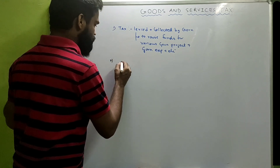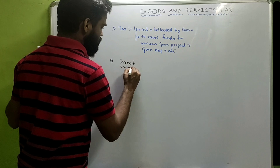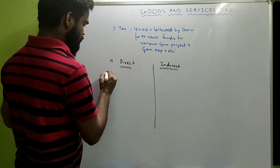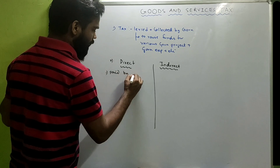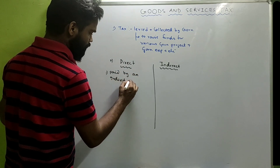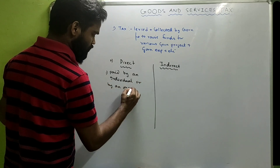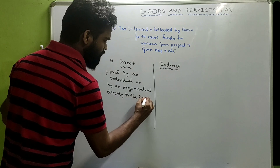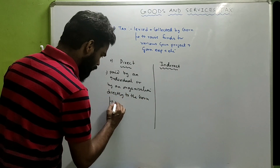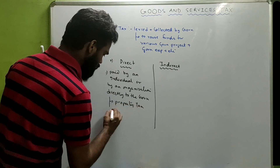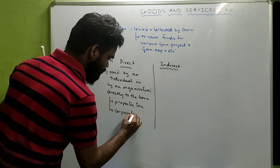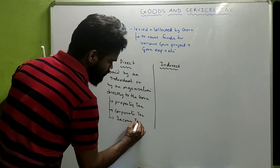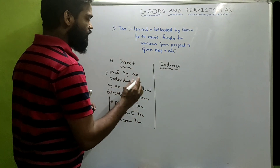Taxes are further divided into two types: direct taxes and indirect taxes. Direct taxes are paid by an individual or by an organization directly to the government. For example, property tax, corporate tax paid by organizations, or income tax paid by individuals — these are all direct taxes paid directly to the government.